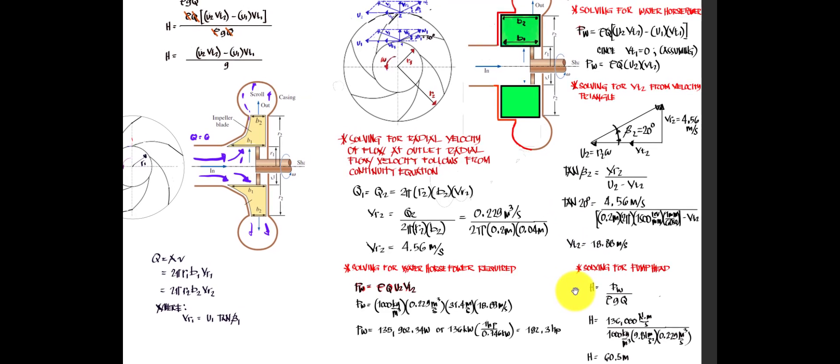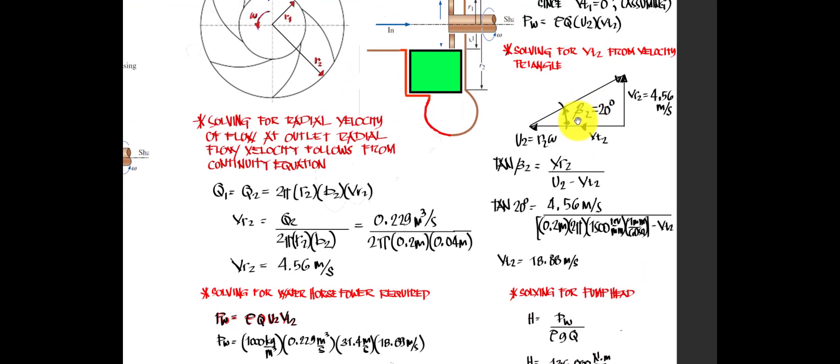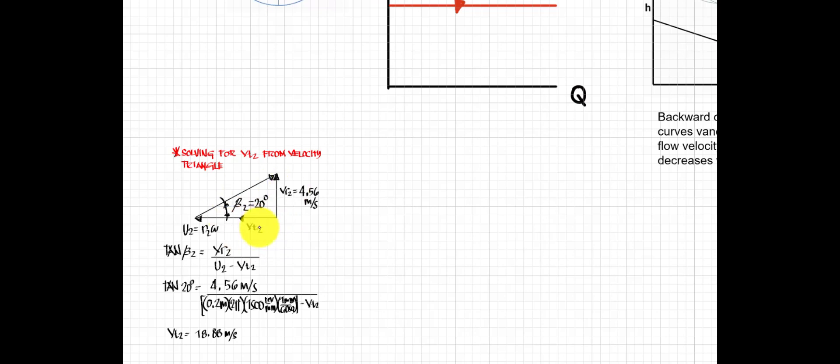Let's go back to our previous problem. We were able to compute the velocity vt2 with an angle of 20 degrees. Now if we change this to 90 degrees, substituting it into the equation — if you input the tangent of 90 degrees into your calculator, you get a complex infinity output.